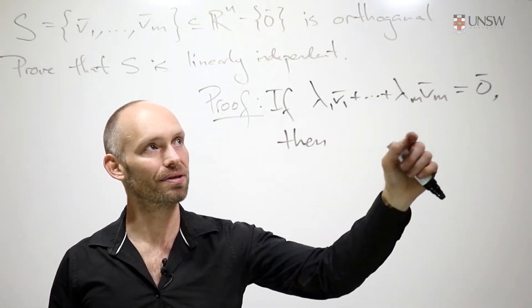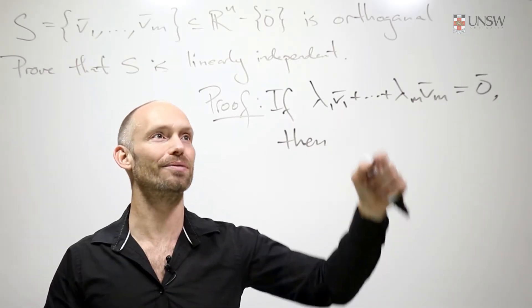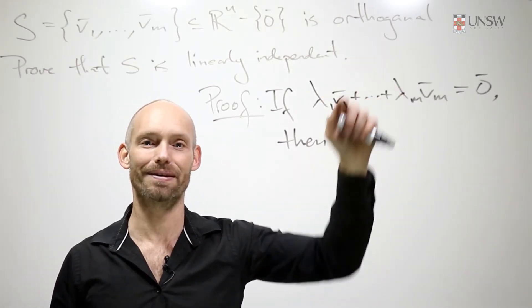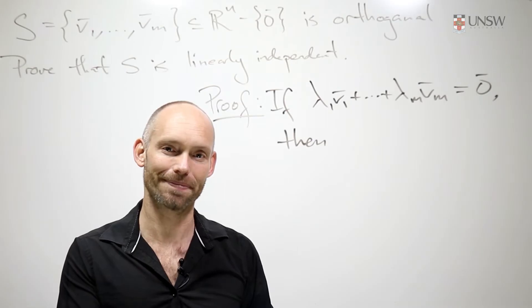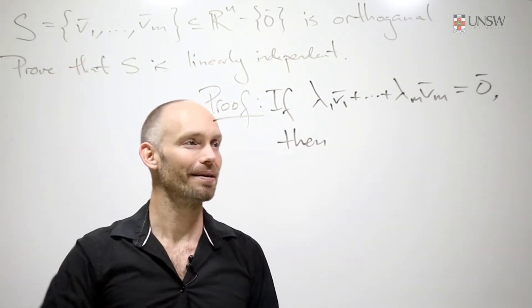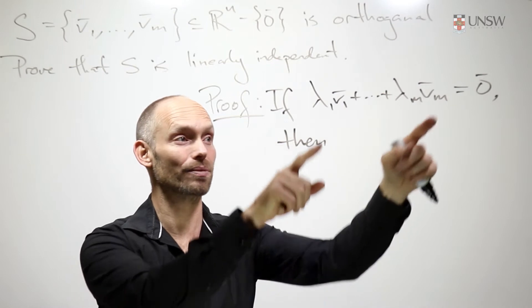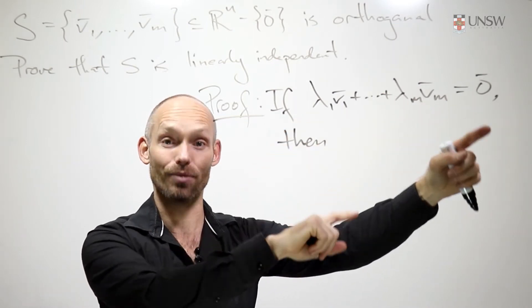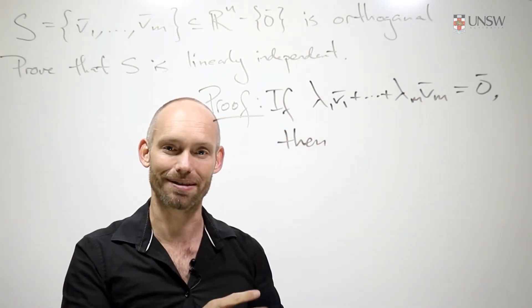Now, the way that we have to do it is use the information that we have, which is that we have an orthogonal set. So that was the bit about the dot products. So we can choose any of these vectors here and take the dot product of that vector with the left-hand side and the right-hand side, and then see what we get. So let's do that.